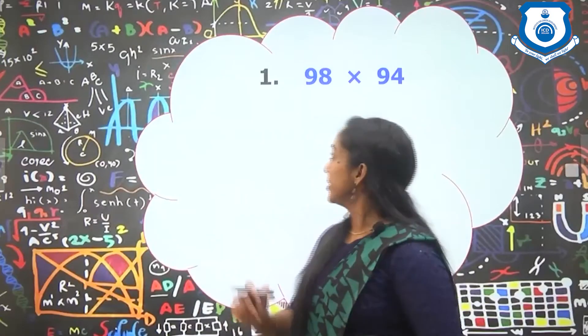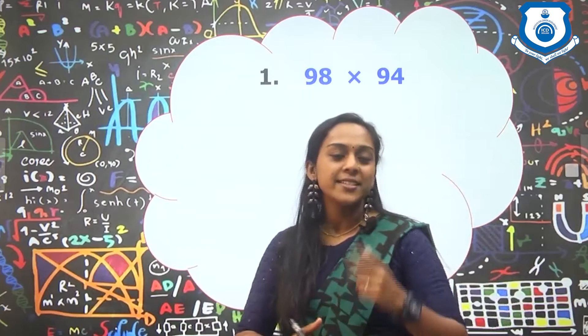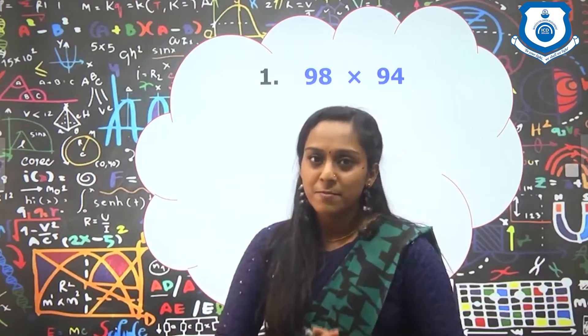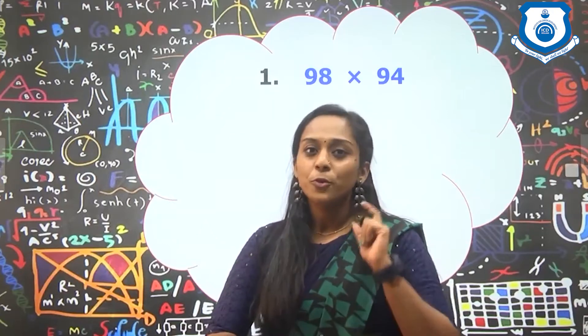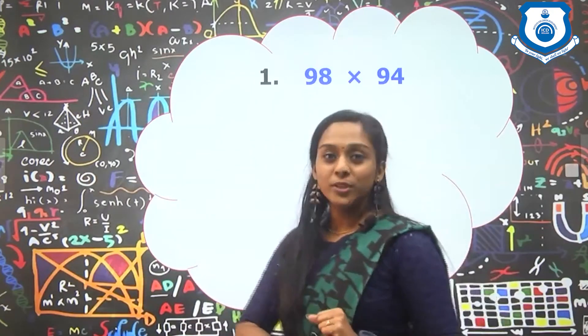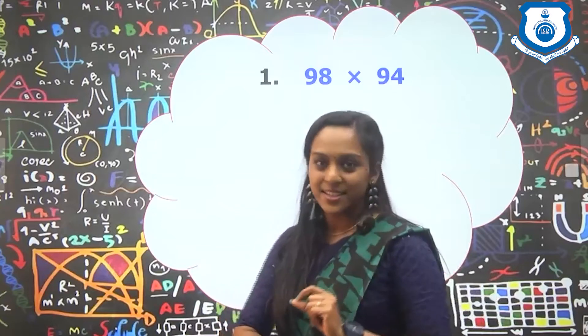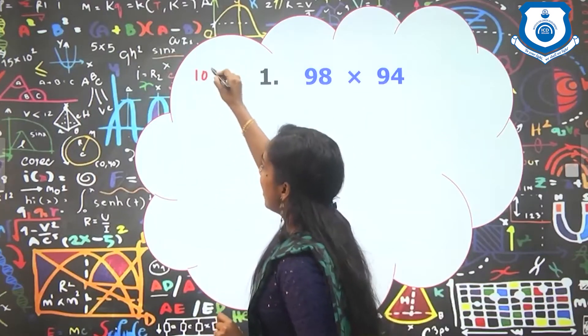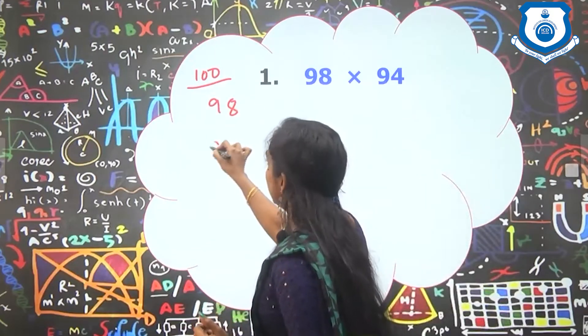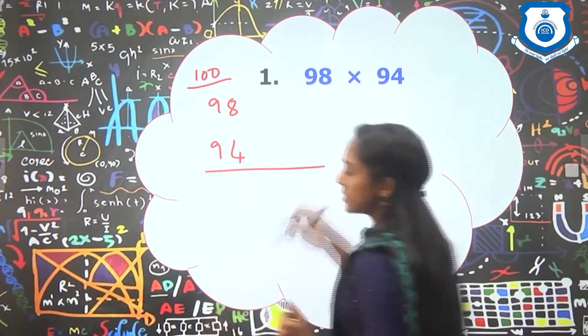So here comes the first question: 98 into 94. As I have discussed earlier, both the numbers should come under the same base. That is the only condition for applying base method. So here, 98 and 94, both these numbers are under the base 100. So we can choose our base at 100.